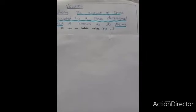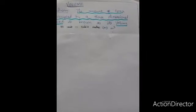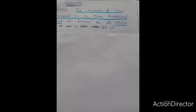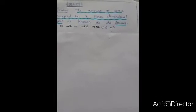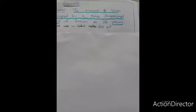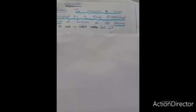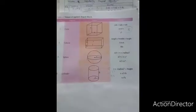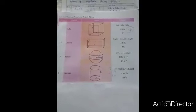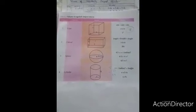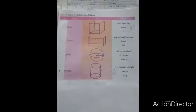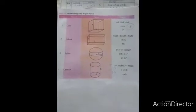The SI unit of volume is cubic meter or m power three. How to find volume of regularly shaped objects like cube, cuboid, sphere and cylinder?